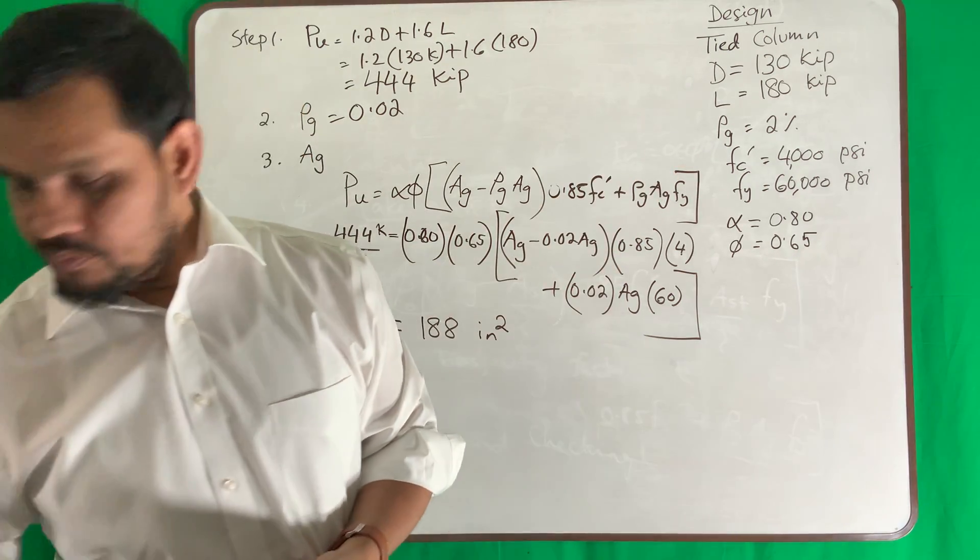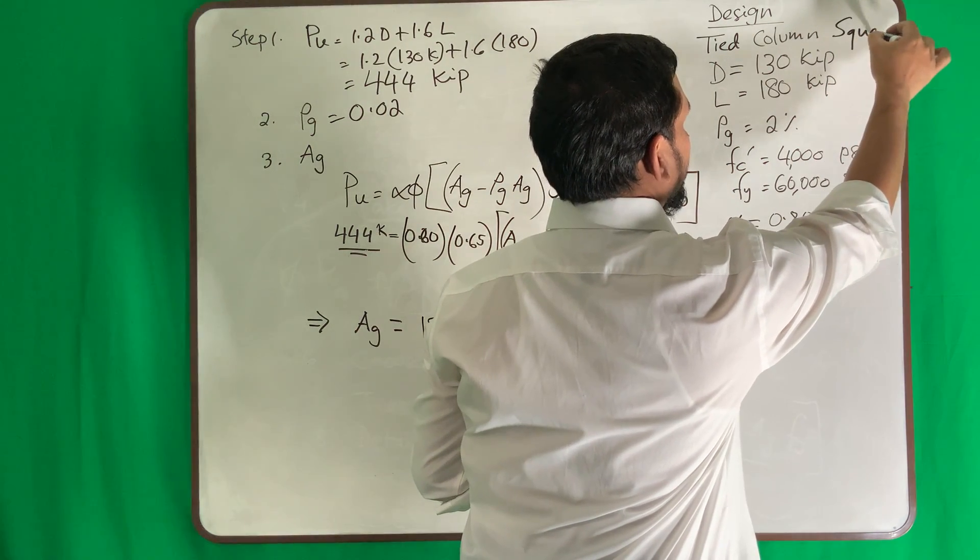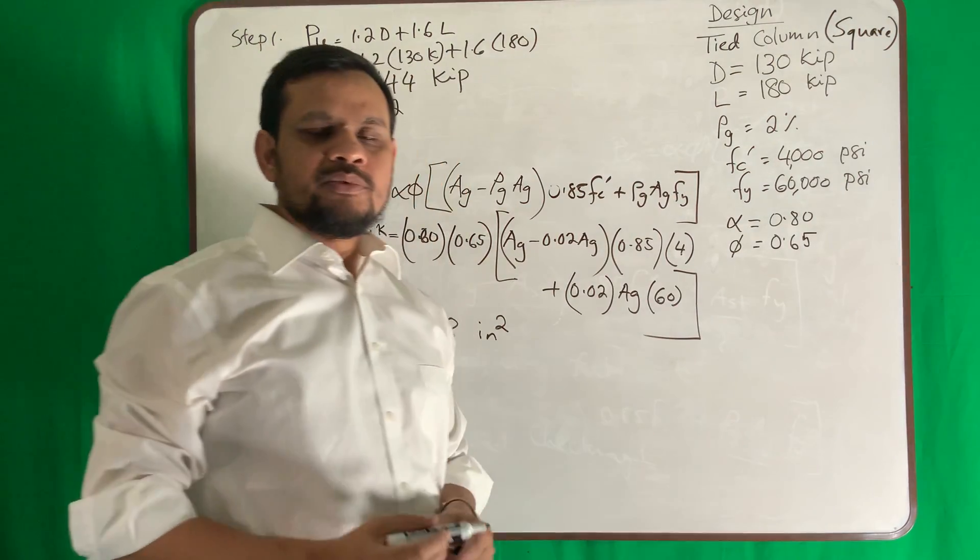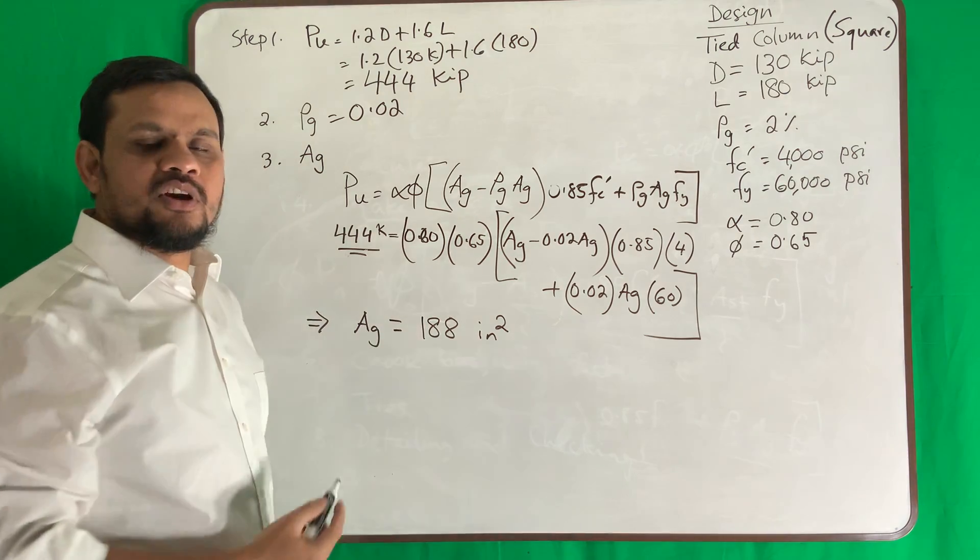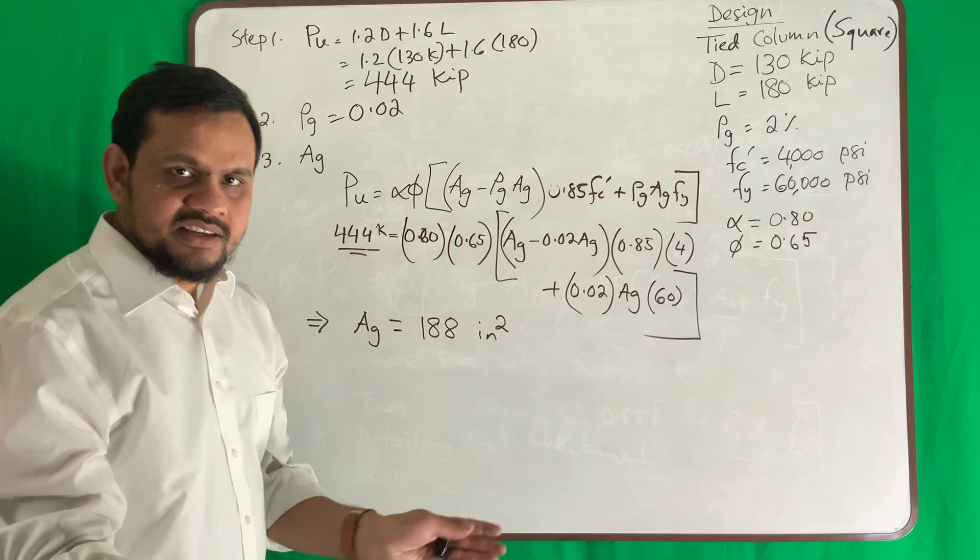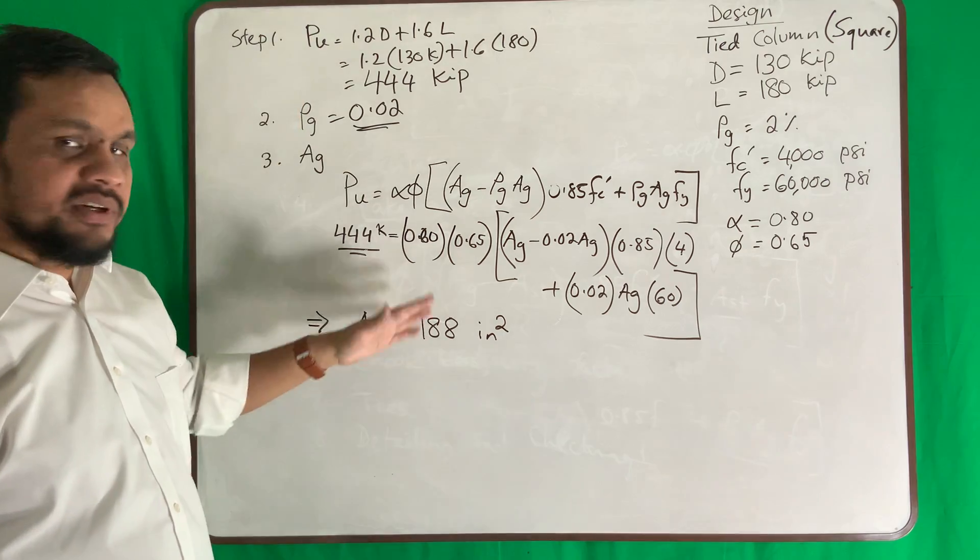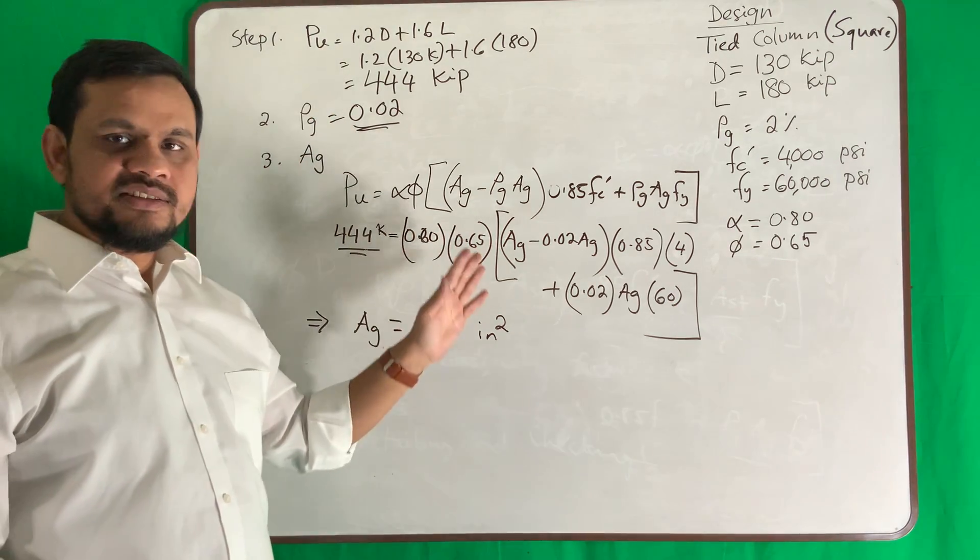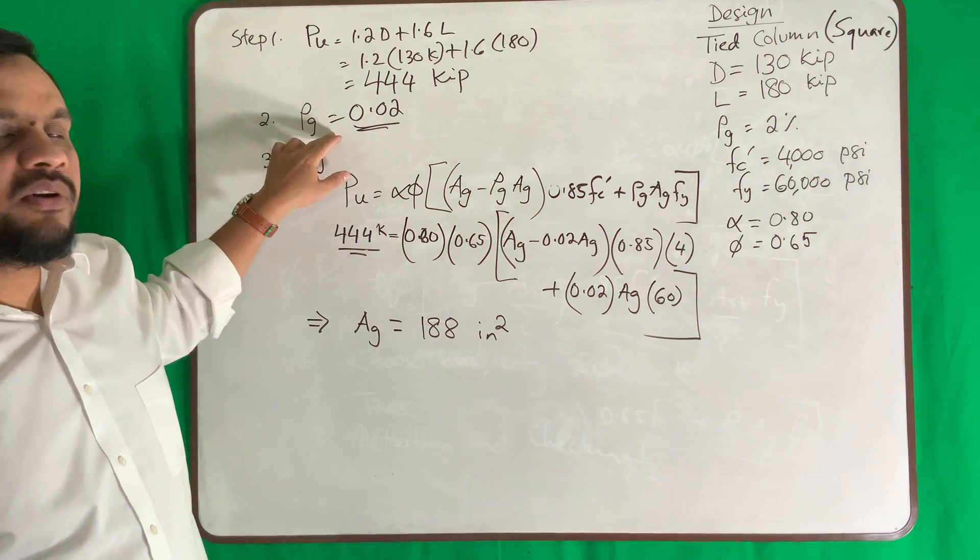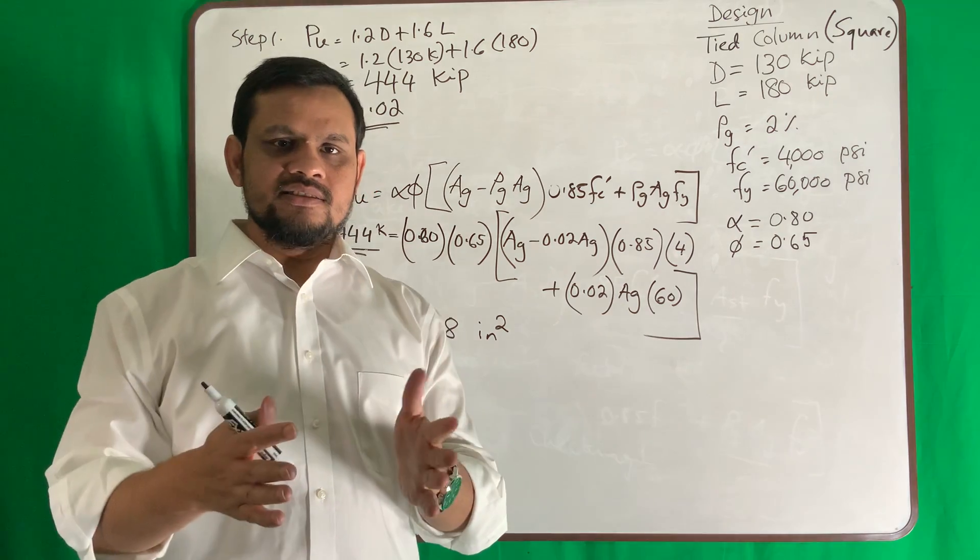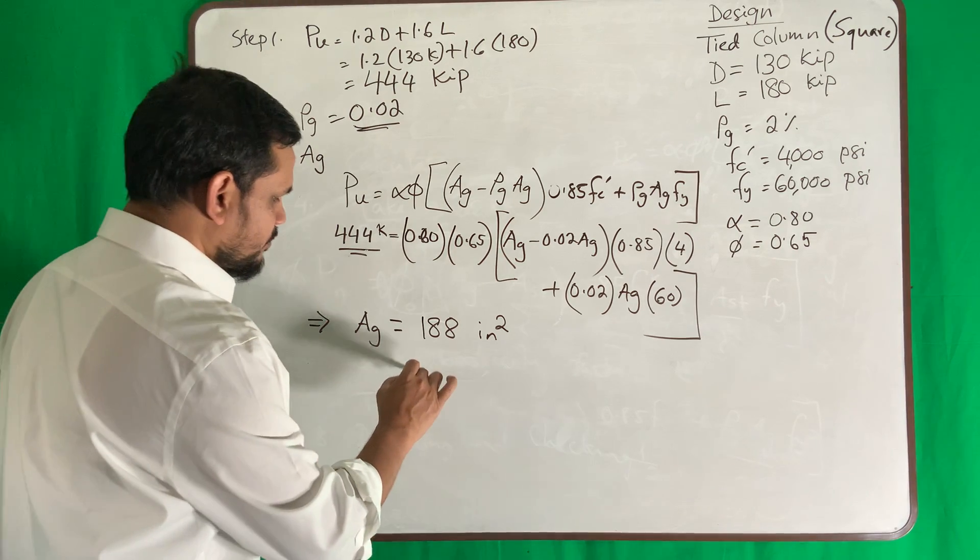Something I forgot to tell you: the problem told us to design a square column. So the problem told us to design a square column. I need this amount of area based on this ρ. Now if we increase your ρ, this will decrease; if you decrease your ρ, this will increase. So this area is not an exact value, it depends on your reinforcement: more reinforcement, less size; less reinforcement, more size.